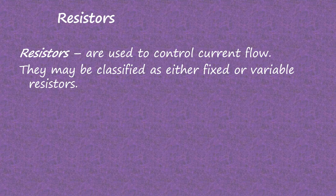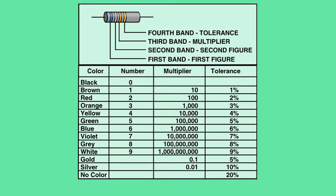Resistors are used to control or restrict current flow. Variable resistors can be thought of like the faucet for your garden hose, which can be used to increase or decrease current flow. Resistors come in a wide variety of sizes and shapes. Smaller resistors can often be identified by a set of colored bands on the resistor which indicate its resistance in ohms.